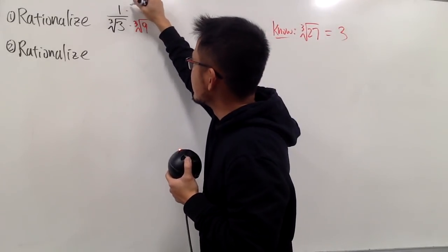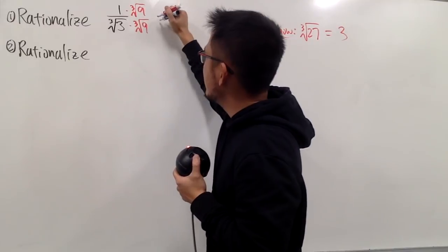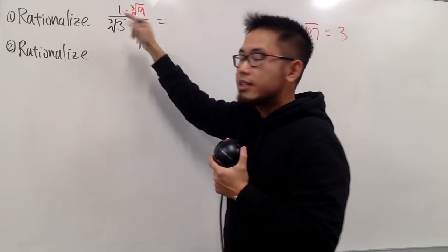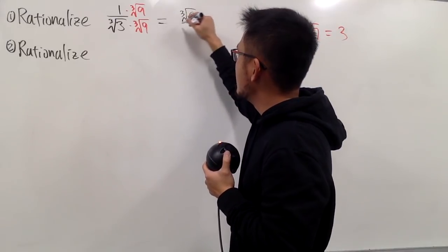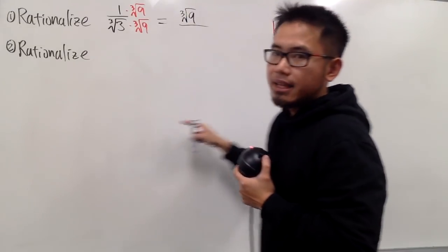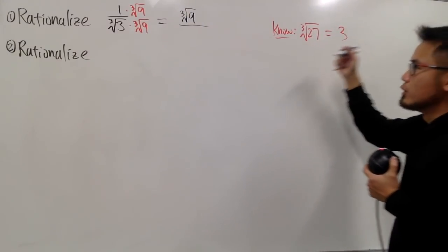And of course, we do the same thing on the top, multiply by cube root of 9, and as you can see, on the top, we have 1 times this, which is still just cube root of 9, over this times that is cube root of 27, which is just a regular 3.